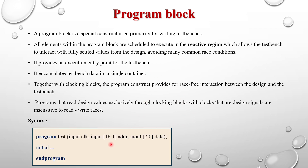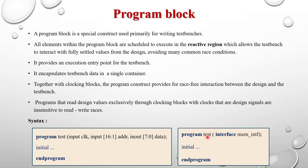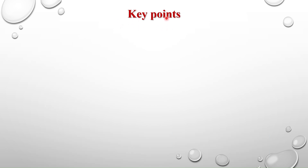The syntax of a program block is similar to a module. You write 'program test' and declare ports — input, clock, inout, output — just as you do in a module. It is also static in nature. You can pass an interface to a program block the same way you do with a module.